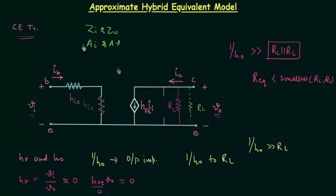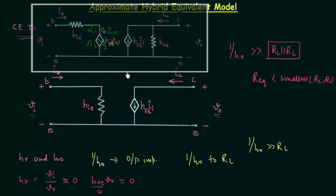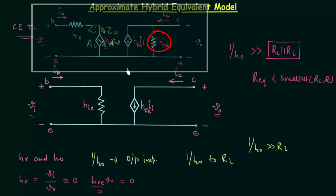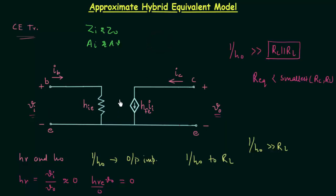After replacing, we have a short circuit, and this circuit is the approximate hybrid equivalent circuit. Rearranging, this is the final circuit. Comparing it with the full hybrid equivalent model, you will find there is no hrvo voltage dependent voltage source and there is no ho output admittance. This is the approximate equivalent model for the common emitter transistor. In this case, the input current is equal to ib.